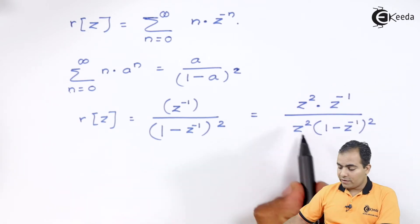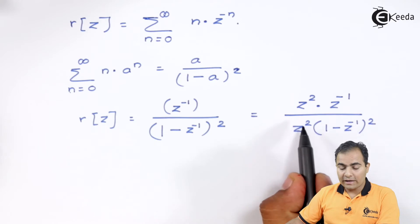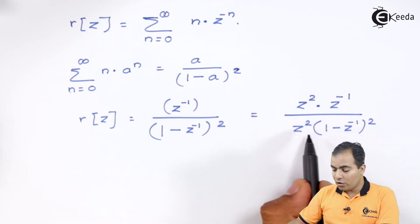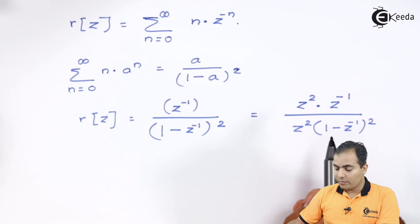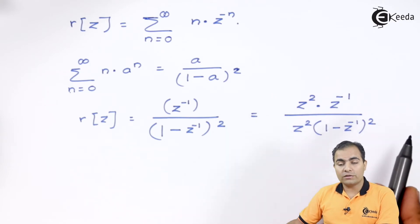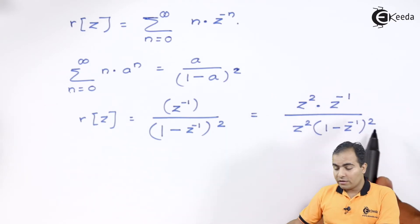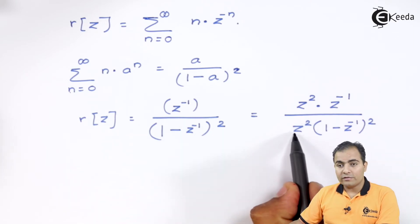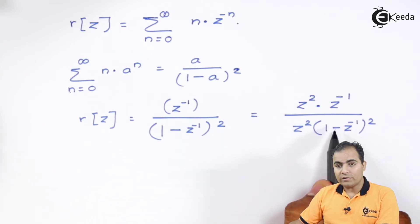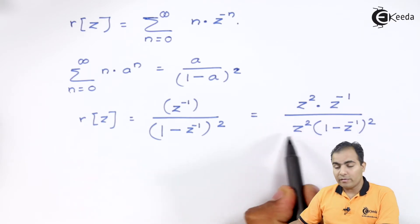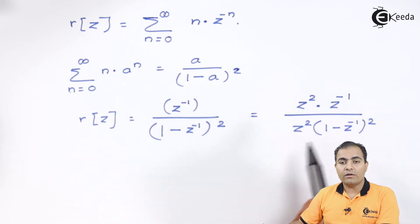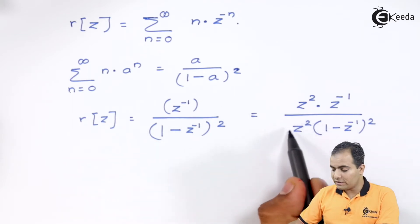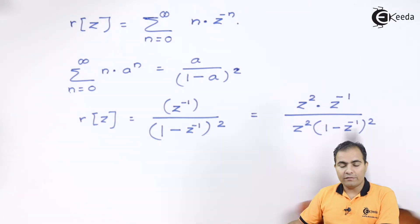Now, if we want to move z square inside the square bracket then only z will enter, not the square, because whenever terms comes out from the square then they will carry this power 2, but when any terms will enter into the square bracket then its power will be reduced by 2 or in order of 2. So, if z square will enter into the square bracket then its order 2 will be vanished. Only z will be multiplied inside this bracket.